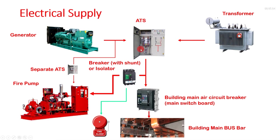This is the electrical supply system: there is a generator and transformer, then an ATS — you all know about ATS — and this is the building main air circuit breaker in the main switchboard. From the building bus bar, we have to take a separate electrical line directly to the fire pump, before your main electrical panel.